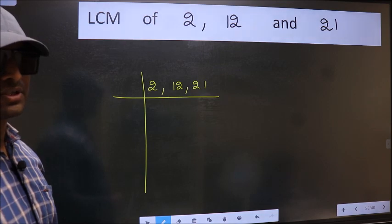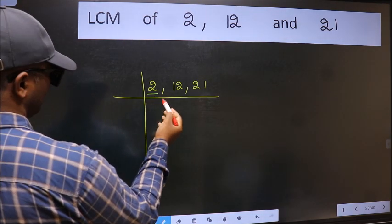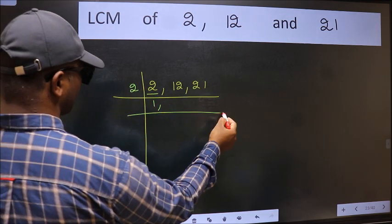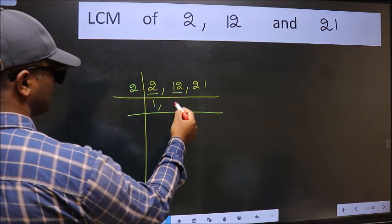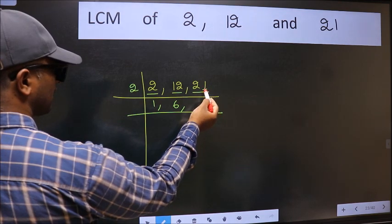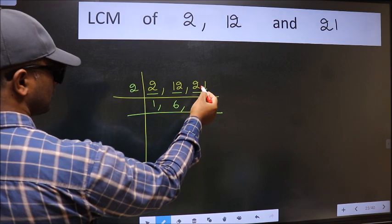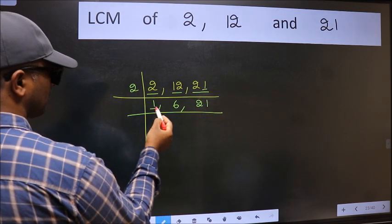Now we should focus on the first number which is 2 here. 2 is the prime number. So 2, 1 is 2. The other number 12. When do we get 12 in 2 table? 2, 6, 12. The other number 21. Last digit 1 not even. So this number is not divisible by 2. So we write it down as it is. Now we got 1 here.